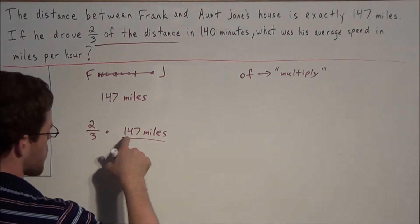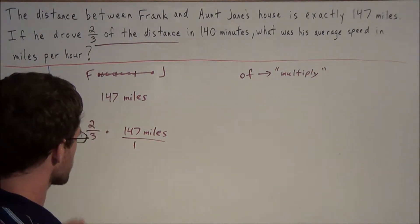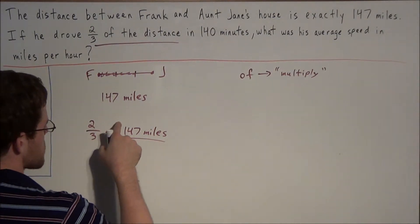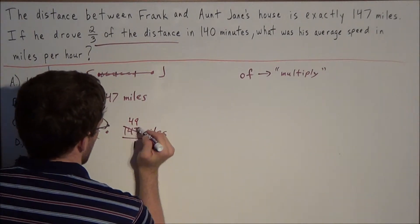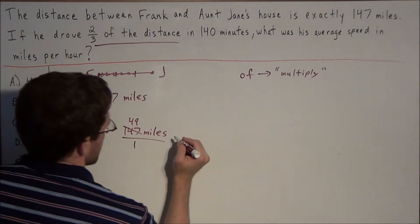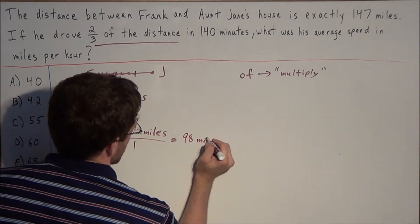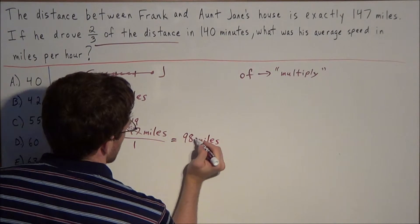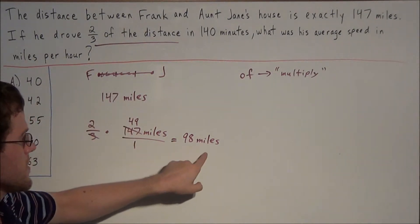So we replace two-thirds of 147 miles with two-thirds times 147 miles. We can write this as 147 miles over 1 and punch it into our calculator, or note that 147 divided by 3 is 49, and 49 times 2 is 98. So two-thirds of 147 miles is 98 miles.